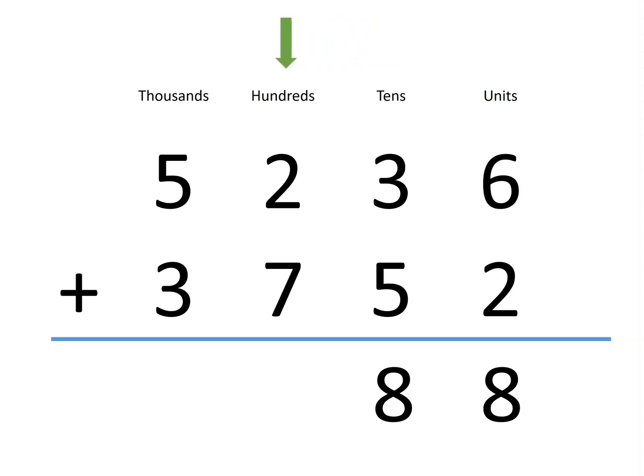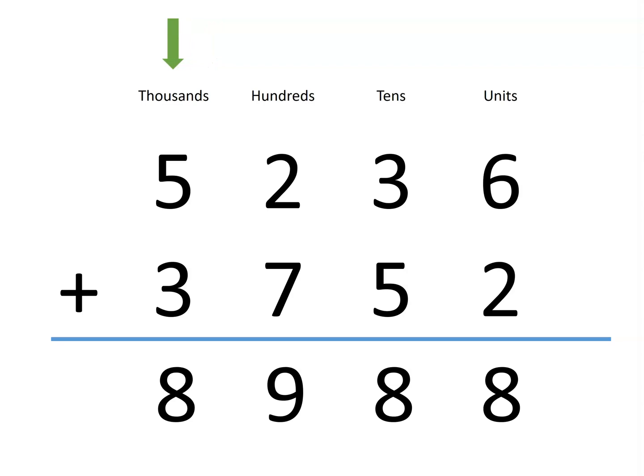In the hundreds column, we have a total of 9 hundreds. Finally, in the thousands column, we have a total of 8 thousands, getting the same sum of 8,988.